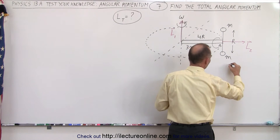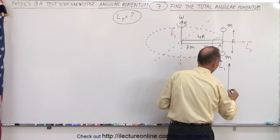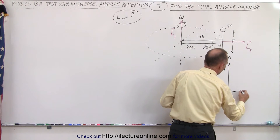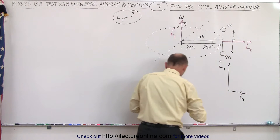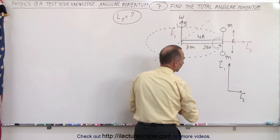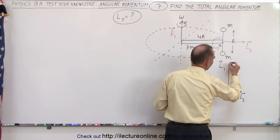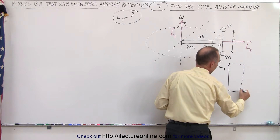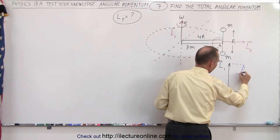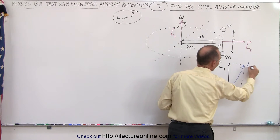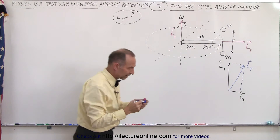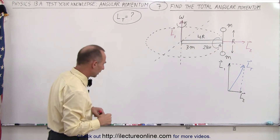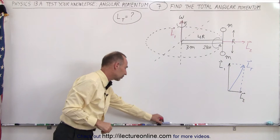So we have L1 upward and L2 outward. If we add the two together, there will then be a vector sum, and that'll be the total L total. That's what we're looking for — we're trying to find the magnitude of that angular momentum vector sum.